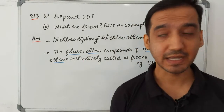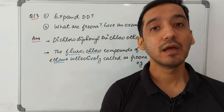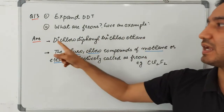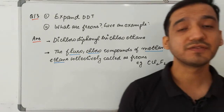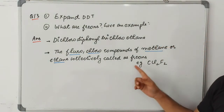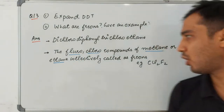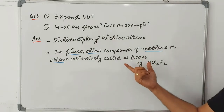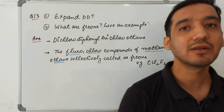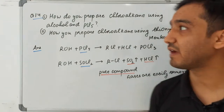Question thirteen: DDT stands for dichlorodiphenyltrichloroethane and was used as an insecticide. Freons are fluoro and chloro compounds of methane and ethane collectively called Freons — for example, CCl₂F₂. In these compounds, hydrogen in methane or ethane is replaced by chlorine or fluorine. Freons can react with ozone and cause ozone depletion (the ozone hole).